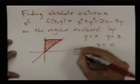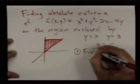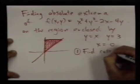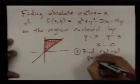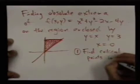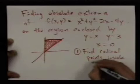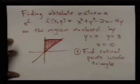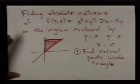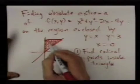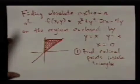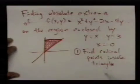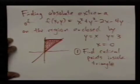So, the first step is to find any critical points inside the triangle. These will be local maxes or mins, and we know if the absolute max or min occurs on the inside, it'll also be a local max or min, and we'll be able to find it using calculus.